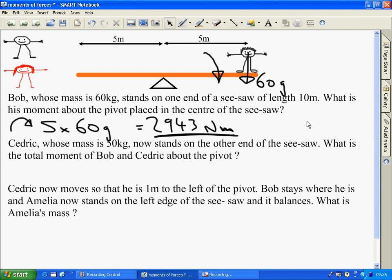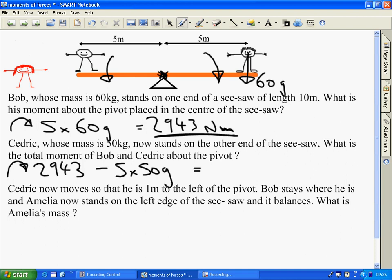Cedric, with mass 50 kilograms, is on the other end. Taking moments clockwise, we have Bob's of 2943. Cedric's is going in the opposite direction, so that's minus his distance times his weight of 50g, giving us 490.5 newton metres. As it's positive, the sum of moments is in the positive clockwise direction. If that was negative, it would be anticlockwise.